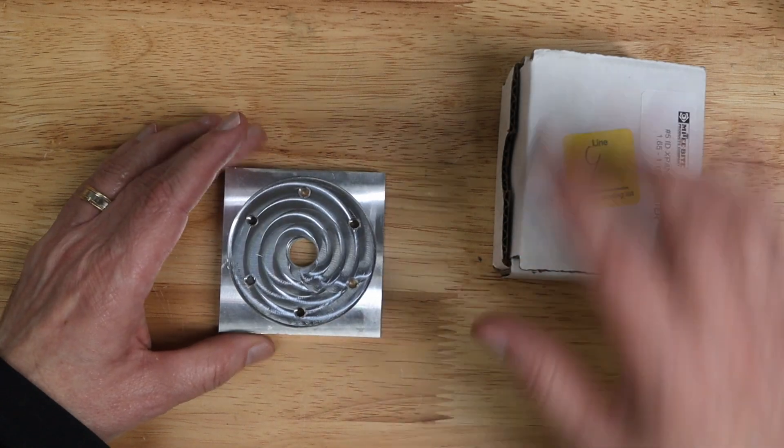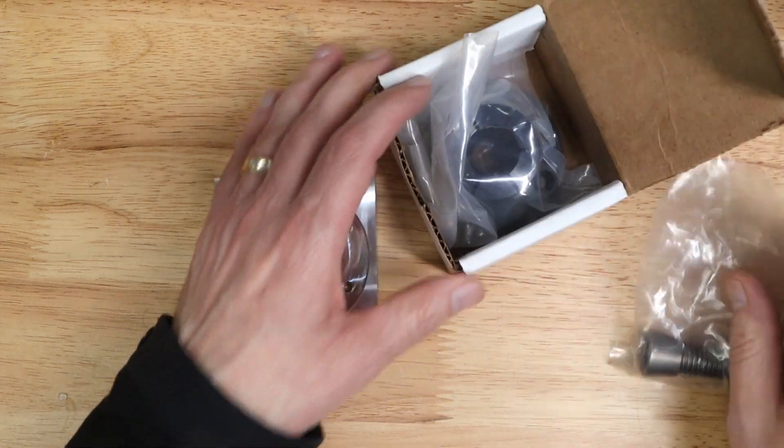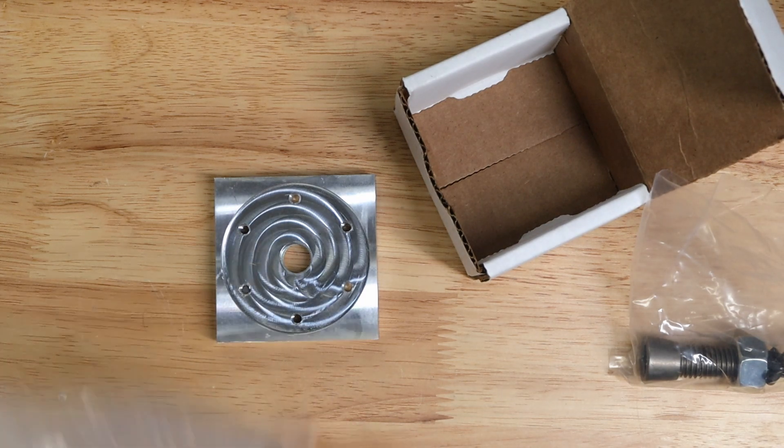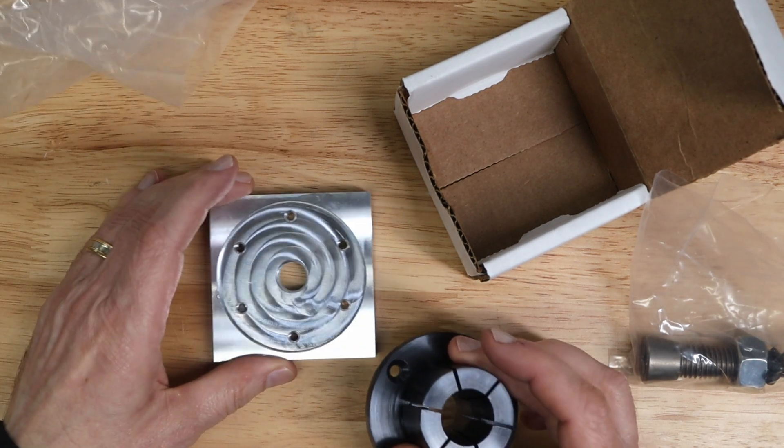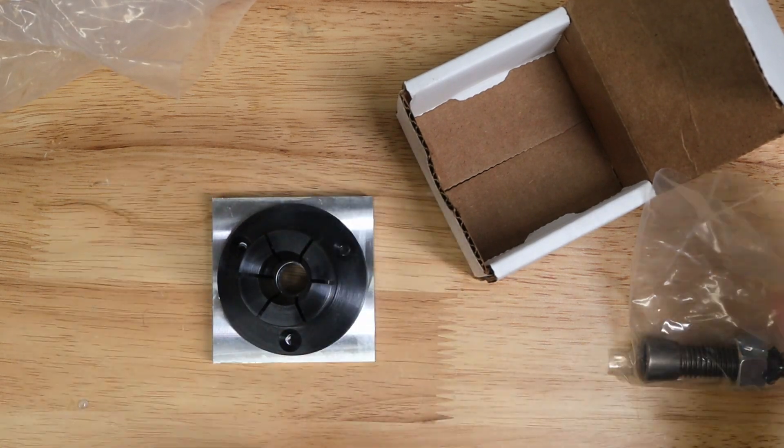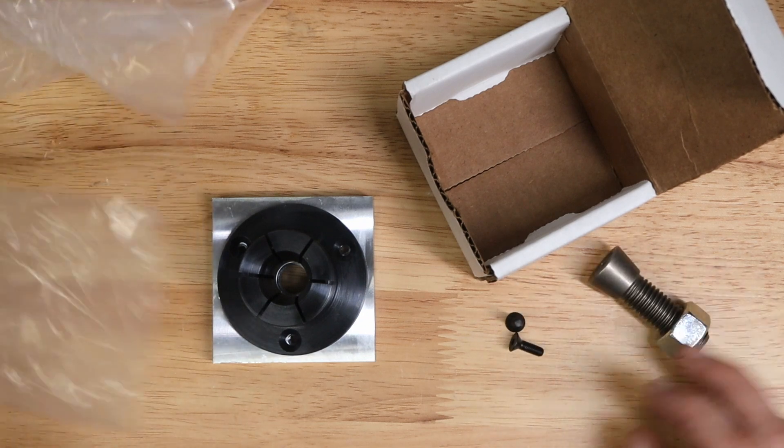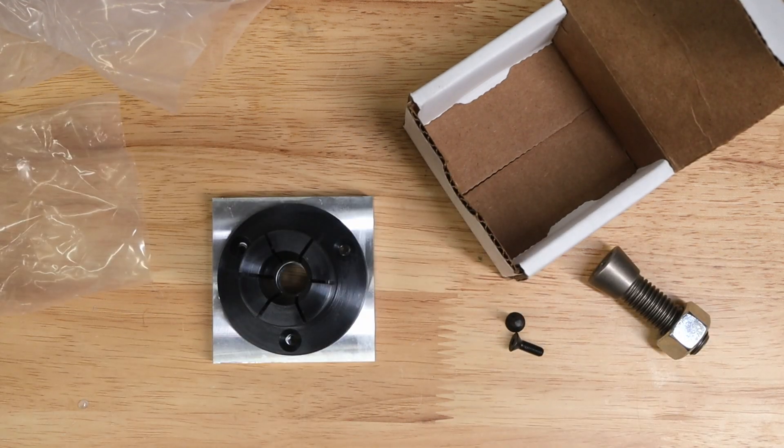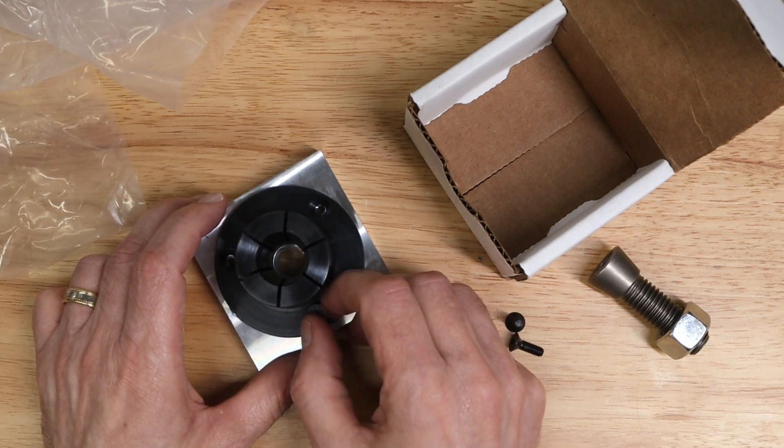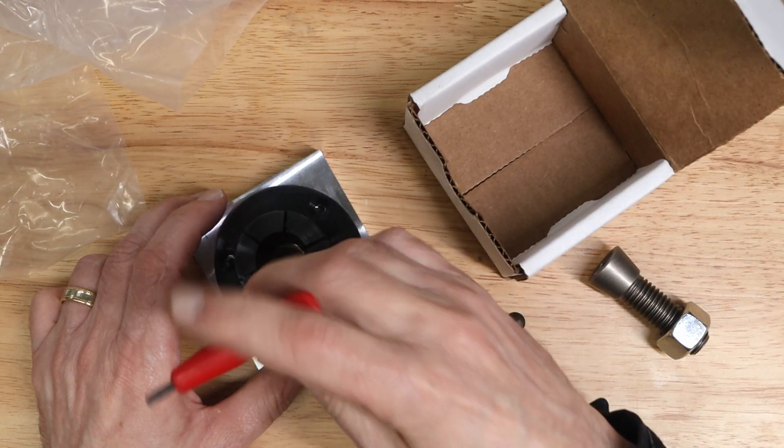This is the fixture to hold the inside diameter clamp. So I should be able to just assemble this now. So those are the three tapped holes, and that means I can put these screws in there.